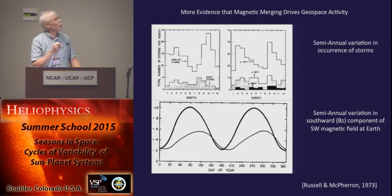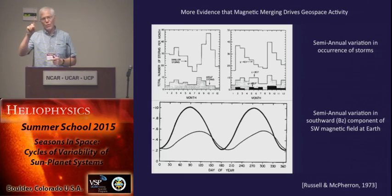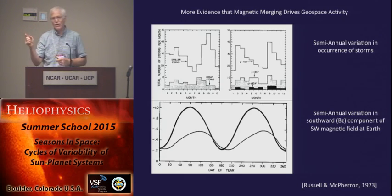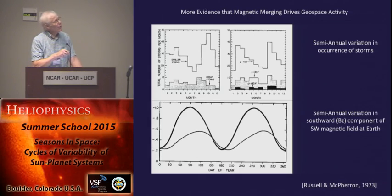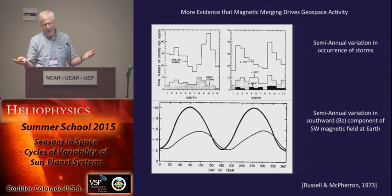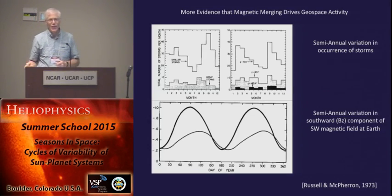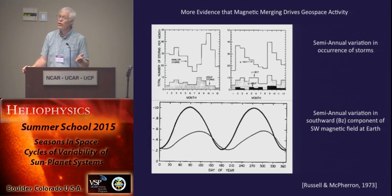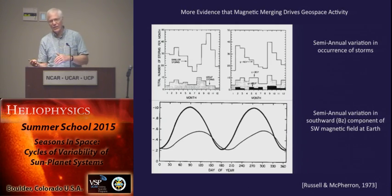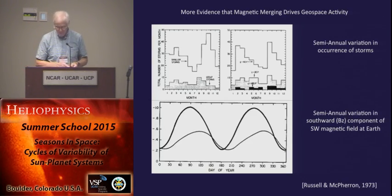Bill also talked about this, which is called the Russell-McFerrin effect. We know that the dipole axis is offset from the rotation axis of the Earth, and the rotation axis varies from plus to minus in the northern hemisphere on an annual cycle. The annual average southward component of the variable magnetic field in the solar wind has a semi-annual variation, which is seen in the semi-annual variation of storms — the Russell-McFerrin effect. It has to do with the offset of the dipole axis, the rotational axis, and the conditions of our orbit around the sun.